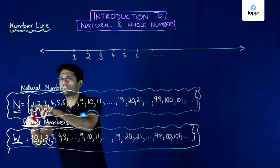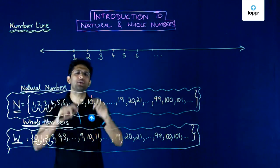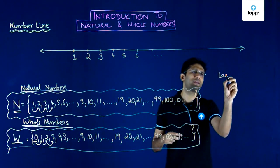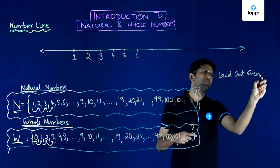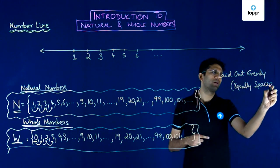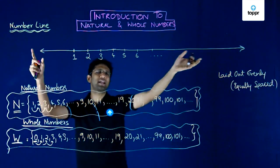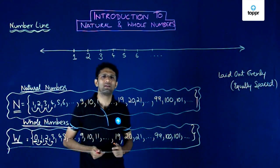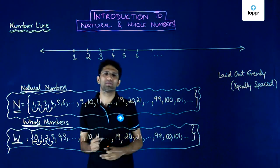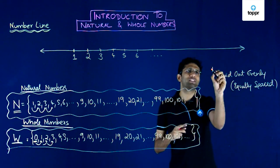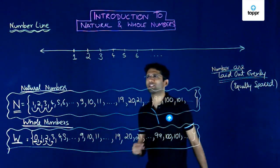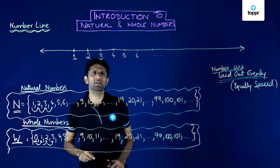We can represent each of the natural numbers 1, 2, 3, 4, 5, 6 on a number line, which is a horizontal line on which the numbers are evenly laid out — that is, equally spaced. On a number line, the numbers are laid out evenly, meaning the distance between 2 and 1 is the same as the distance between 3 and 2, which is the same as the distance between 4 and 3 and so on. We have now represented natural numbers on this number line.